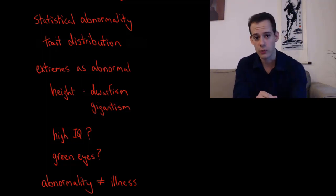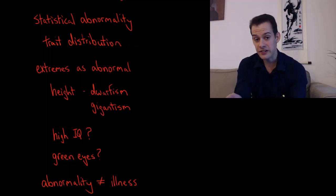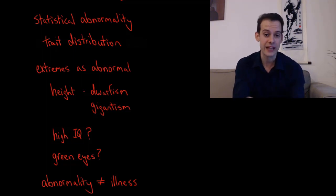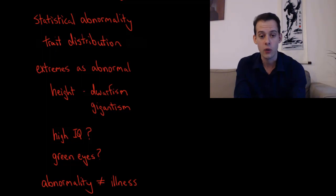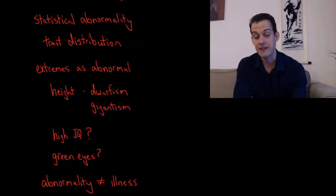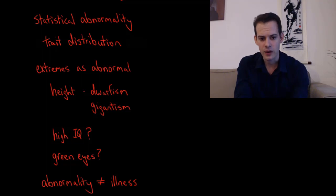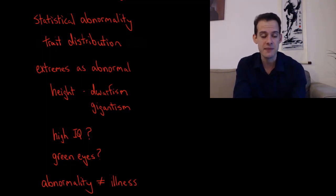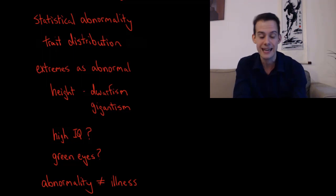The opposite is also true: just because something is an illness doesn't mean it will necessarily be statistically abnormal. For instance, we might find a very high rate of depression in a particular population. Just because it's common in that population doesn't mean it's no longer an illness — it's still an illness even though it's not abnormal in that group.